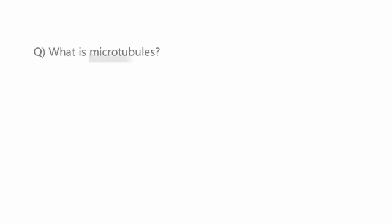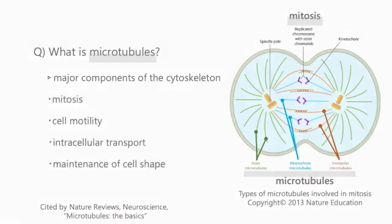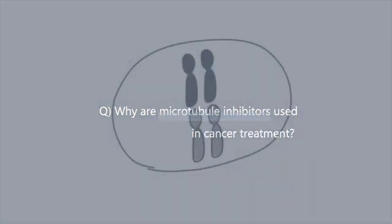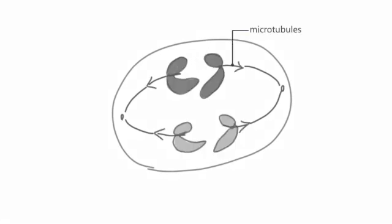What are microtubules? Microtubules are major components of the cytoskeleton, playing roles in mitosis, cell motility, intracellular transport, and maintaining cell shape. Why are microtubule inhibitors used in cancer treatment? When cells divide, the mitotic spindles elongate and pull the chromosomes to opposite poles. These mitotic spindles are composed of microtubules. Therefore, inhibiting the function of microtubules prevents cell division and leads to cell death.